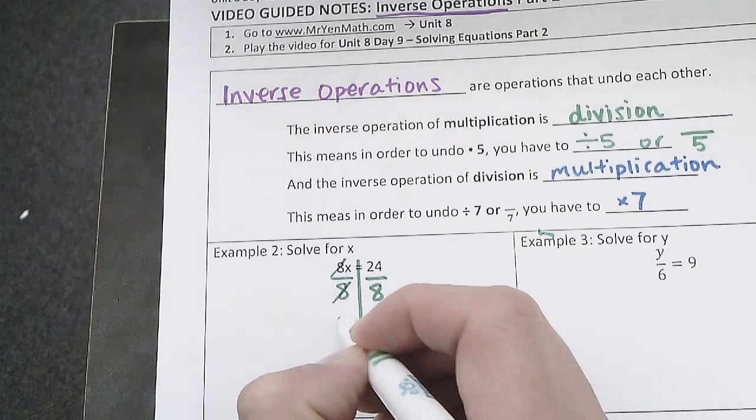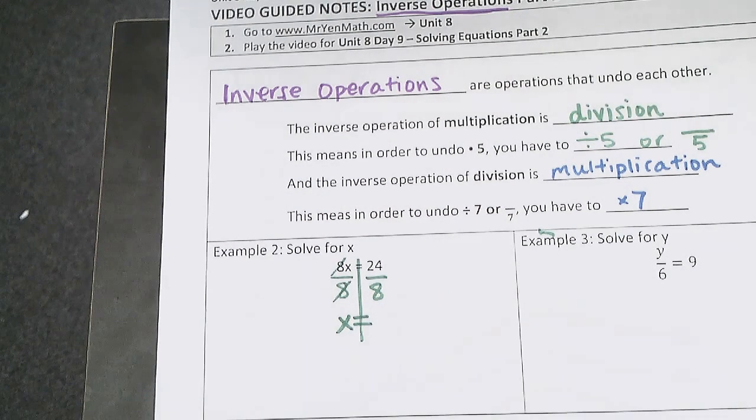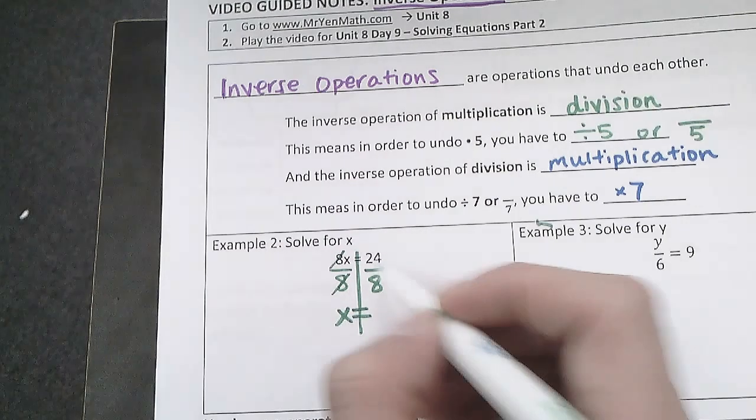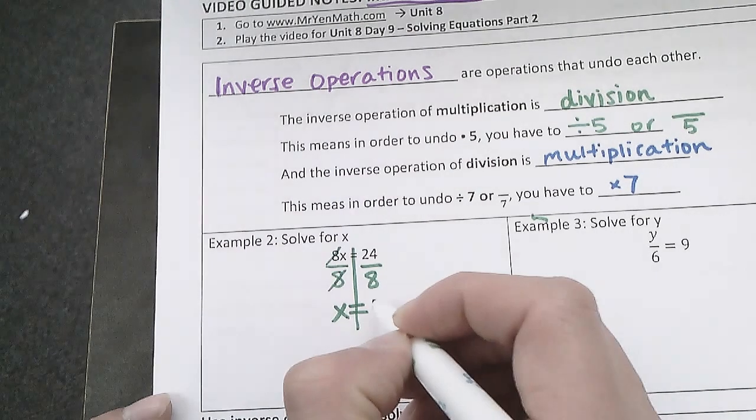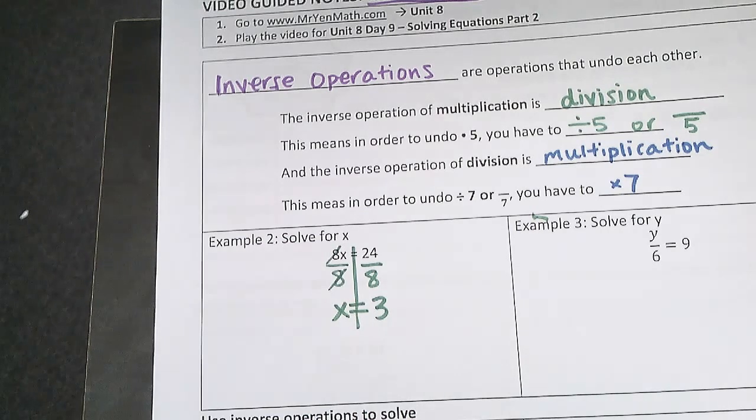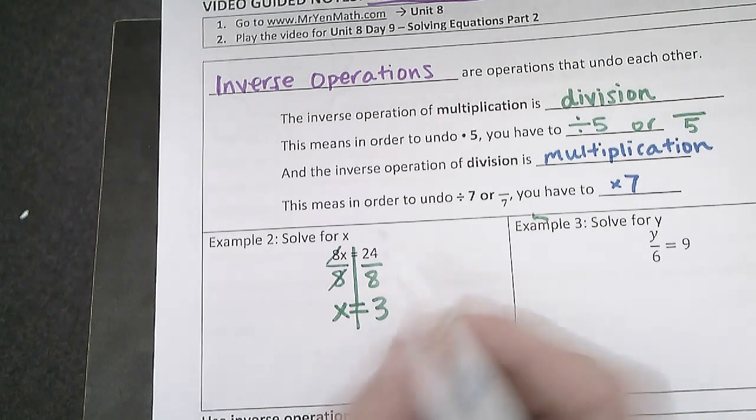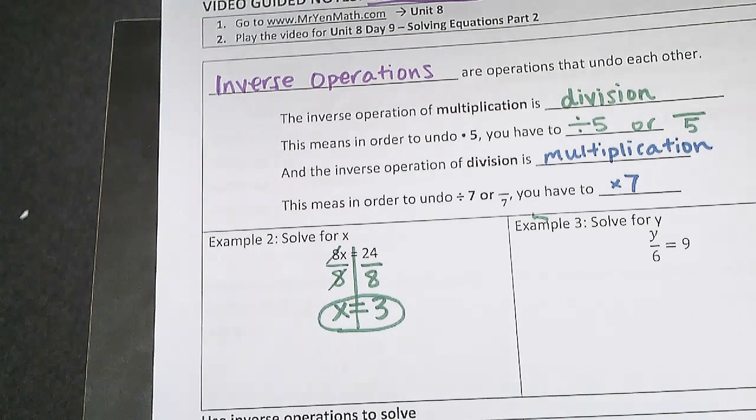And I'm just left with the x now, and this equals 24 divided by 8, that equals 3. So I can get x all by itself, and I know that x equals 3.